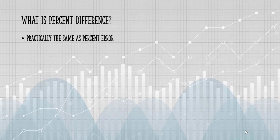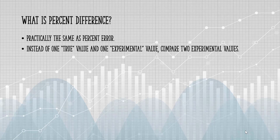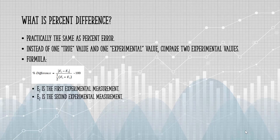Percent difference is about the same as percent error. Only instead of one true value and one experimental value, you compare two experimental values. Here's the formula.